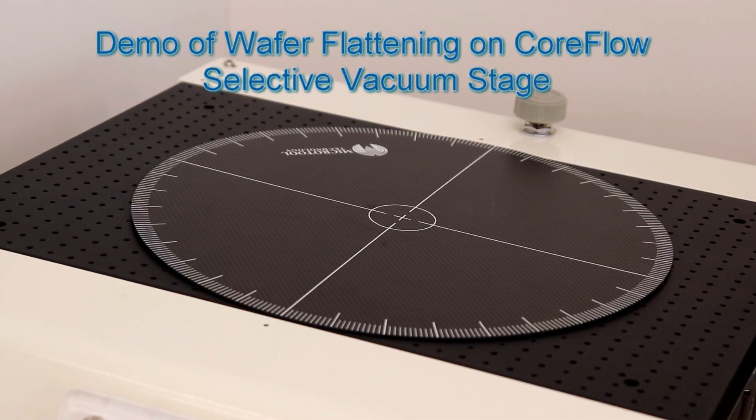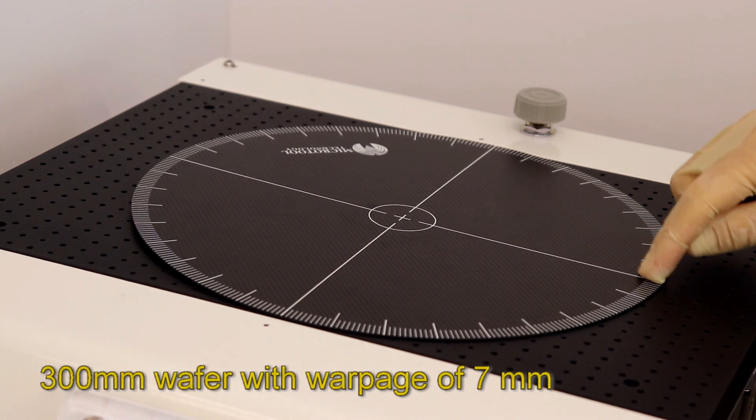Here we demonstrate how a rectangular selective vacuum stage without pads can flatten a warped wafer.